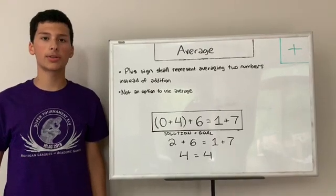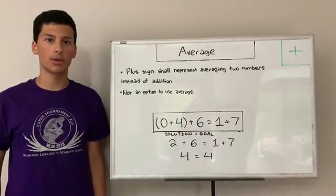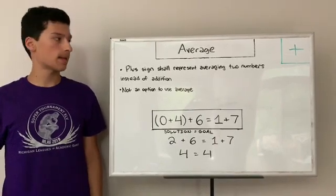So we've now entered the variations that are to be played in the even years, like 2020, 2022, etc. The first one is average.